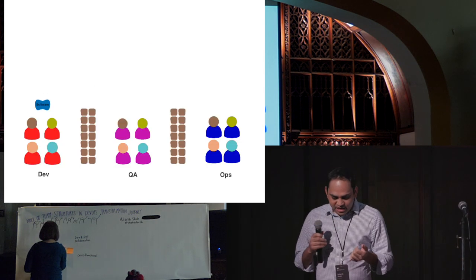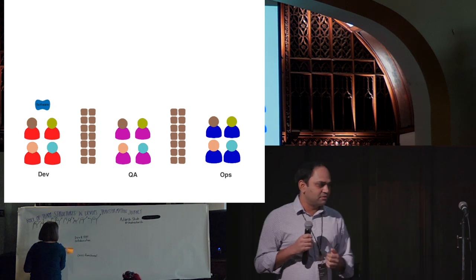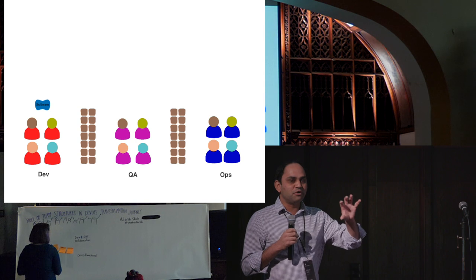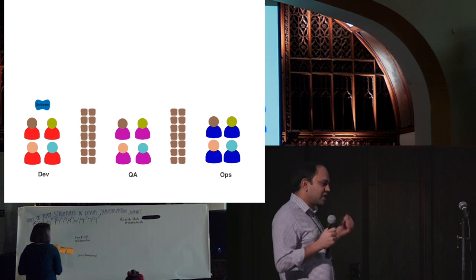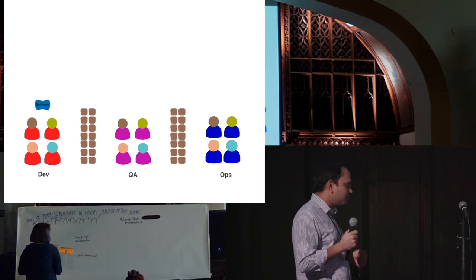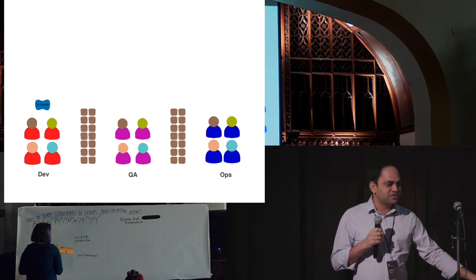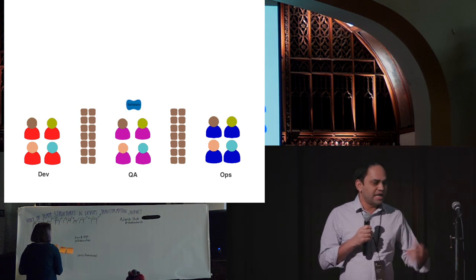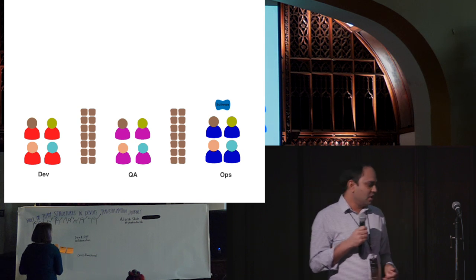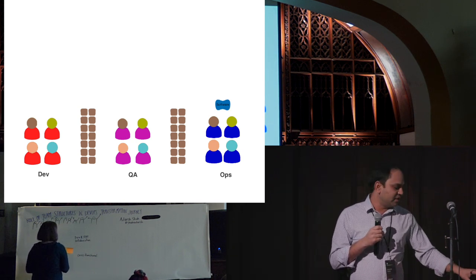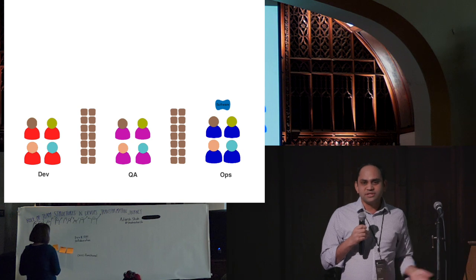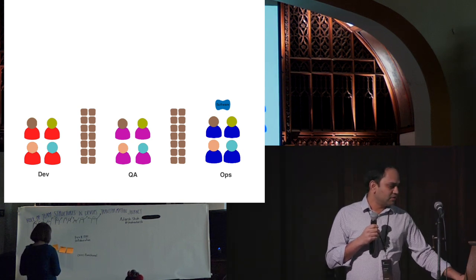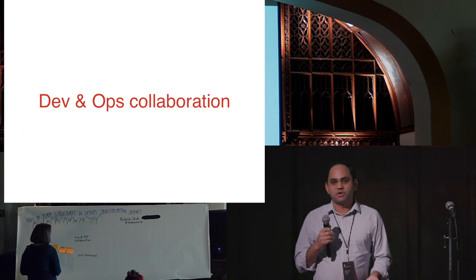In a lot of organizations, you don't just have dev and ops — you have many different functional silos: devs, QAs, ops, and possibly a DBA team. So there are multiple handoffs, and the more handoffs there are, the more delays there are to get a feature to production, which worsens feature lead time even further.